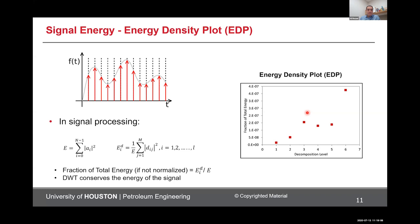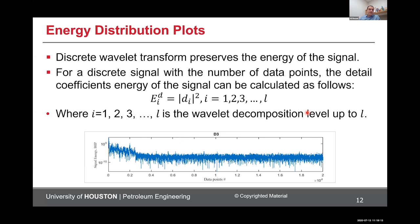The energy distribution plot is different from the energy density plot. The energy density plot is just a number, whereas the energy distribution plot shows the distribution of a specific decomposition level's noise in time, with the y-axis in log scale. An important property is that the discrete wavelet transform preserves the energy of the signal. If we choose one of those decomposition levels — say level six, five, or four — and plot it in time, we can do further analysis. I wanted you to distinguish between these two: energy distribution plot and energy density plot.